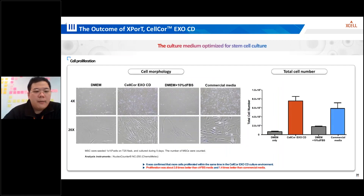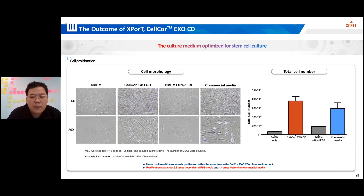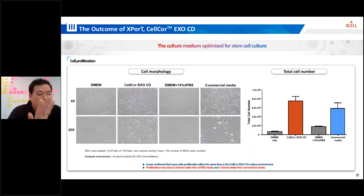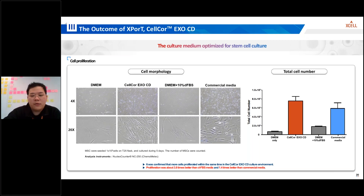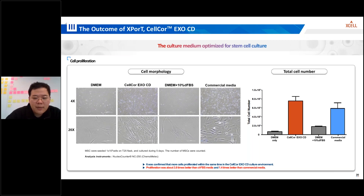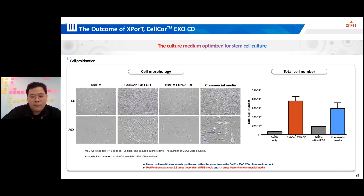CELCO XCD plays an important role in stem cell cultures. In this experiment, MSCs were cultured in different media and the number of mesenchymal stem cells was quantified after five-day culture. The results show that CELCO XCD promotes superior MSC proliferation in terms of total cell numbers compared to other media. During the same period, a significantly higher number of cells proliferated in CELCO XCD cultures — the proliferation rate was approximately 3.8 times better than FBS and 1.5 times better than commercial media — demonstrating the potential of CELCO XCD to support robust stem cell growth.